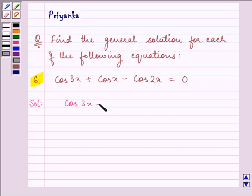cos 3x plus cos x minus cos 2x is equal to 0. First of all, we will be applying the formula of cos a plus cos b in order to proceed to the next step.